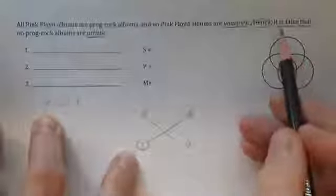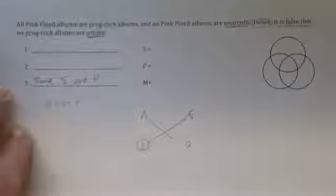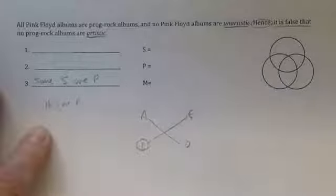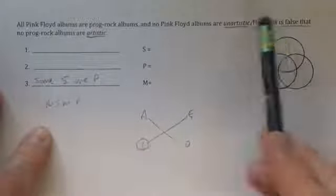So, since we're given the claim it is false that no S R P, we're going to treat the conclusion as asserting some S R P. That would be the standard form of that non-standard form proposition.